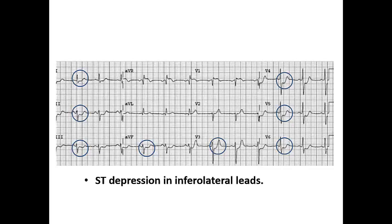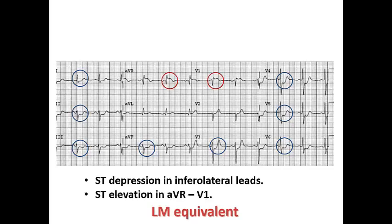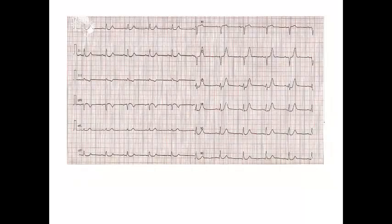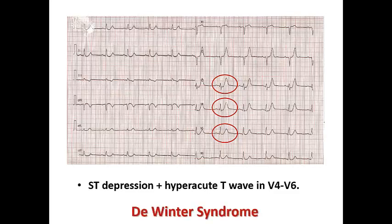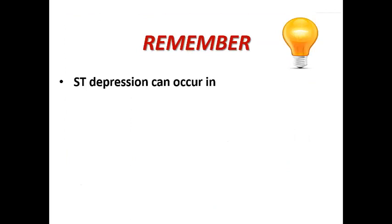Here we see diffuse ST depression in lateral leads, inferior leads, and from V3 to V6. Is this high-risk non-STEMI? No — it is a left main equivalent, as there is ST elevation in V1 and AVR, indicating equivalent left main vessel disease or combined LAD/LCX involvement. This patient should be considered as STEMI. In another case, ST depression from V3 to V5 with hyperacute T waves exceeding more than two-thirds of the QRS complex amplitude — this is DeWinter syndrome, indicating proximal LAD occlusion. This patient should also be considered STEMI.